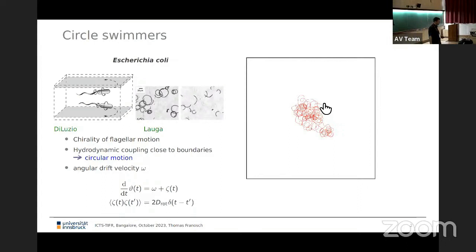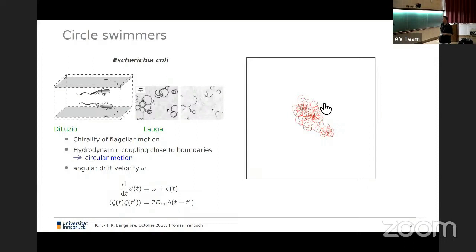There's one more feature we should take into account, shown in this experiment. For E. coli bacteria driven by flagella rotation, if you bring these particles close to a surface, the hydrodynamic flow induces a back-coupling. Like swimming in a pool near the border — you emit vortices while swimming, they reflect off the wall and interact with you. This flagella motion gives rise to a chirality, and these E. coli bacteria start swimming in circles. These are genetically engineered ones where reorientation is suppressed.